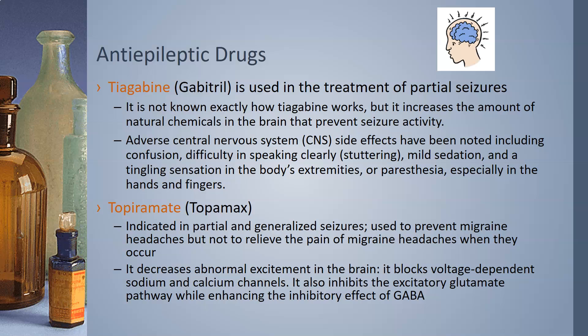Topiramate, also known as Topamax, is indicated in partial and generalized seizures. It is used as a preventative medicine for migraine headaches but cannot relieve the pain of a migraine that has already started. It decreases abnormal excitement in the brain by blocking voltage-dependent sodium and calcium channels. It also inhibits the excitatory glutamate pathway while enhancing the inhibitory effects of GABA.